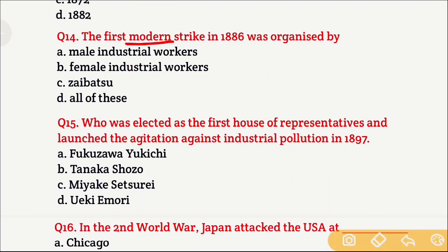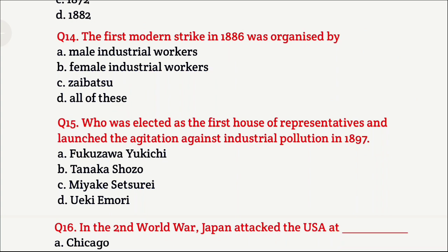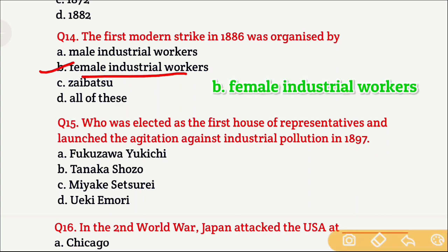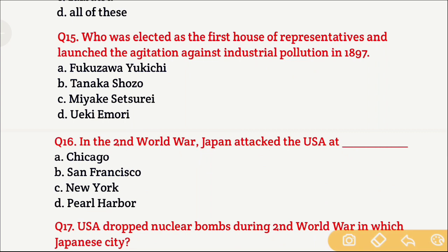Question 14: The first modern strike in 1886 was organized by — the first modern strike in Japan in 1886 was organized by workers. Option A is male industrial workers, Option B is female industrial workers, Option C is Zaibatsu, and Option D is all of these. The right answer is Option B — female industrial workers — women workers organized the first modern strike in 1886 in Japan.